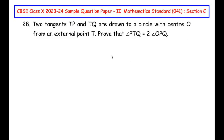This question is from the circles chapter. Two tangents TP and TQ are drawn to a circle with center O from an external point T. Prove that angle PTQ is equal to 2 times angle OPQ.